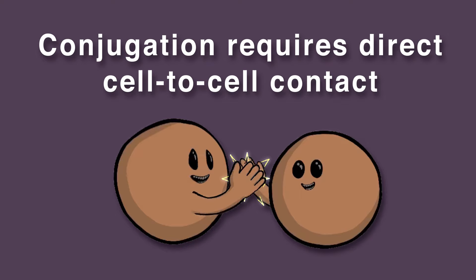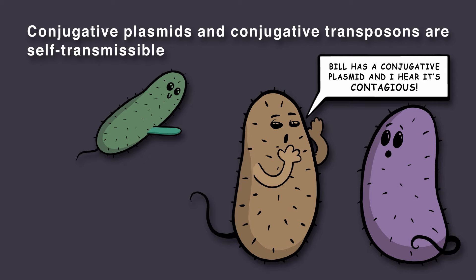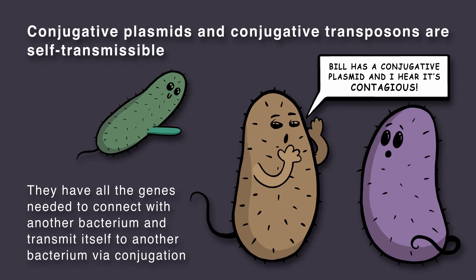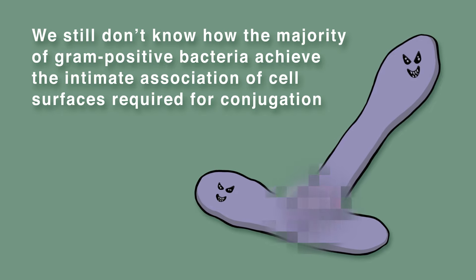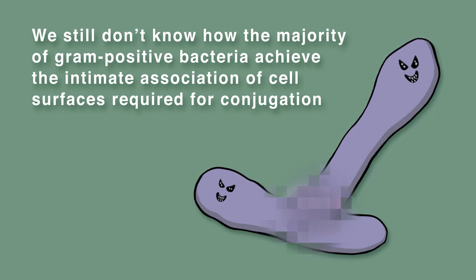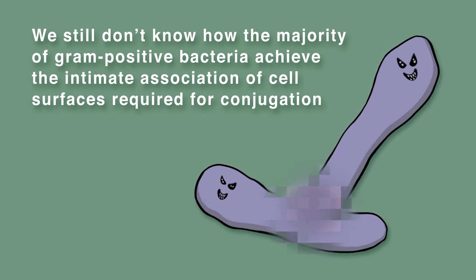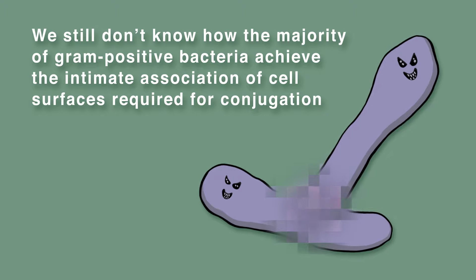Conjugation requires direct cell-to-cell contact. A conjugative plasmid or conjugative transposon is self-transmissible — in other words, it has all the genes needed to connect with another bacterium and transmit itself to another bacterium via conjugation. We still don't know how the majority of gram-positive bacteria achieve the intimate association of cell surfaces required.